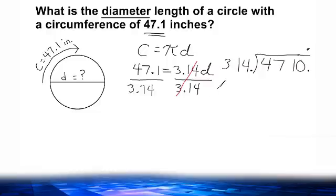After moving it an equal number of place values, you move it directly above in the problem. 314 can be divided into 471 one time. One times 314 is 314. Next we subtract 314 from 471, which gives us a difference of 157. But we still have a place value not accounted for, so we take that zero and drop it down, and now we have 1570.